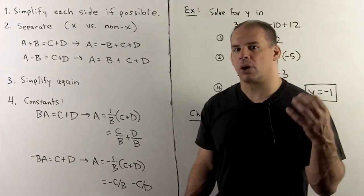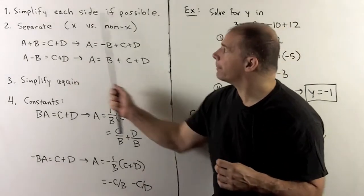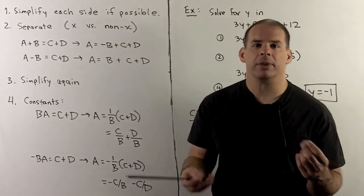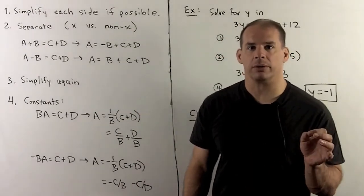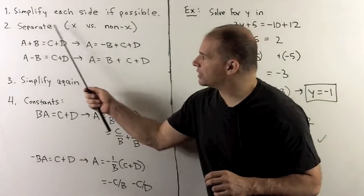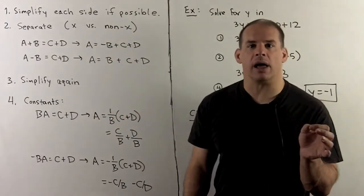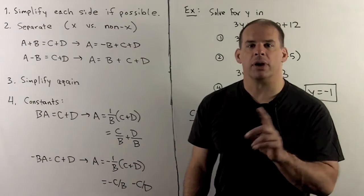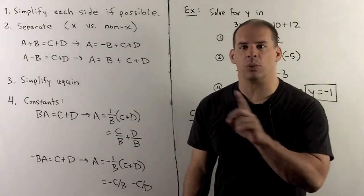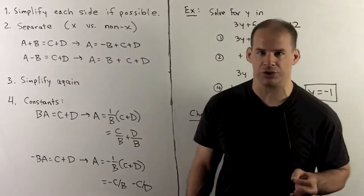For that, we start with a checklist. First step: we want to simplify things on either side if possible. Then we'll want to separate into two sides of the equality. So if our variable is x, I want to put any terms that have an x on one side of the equality, everything else on the other side.